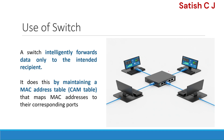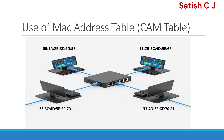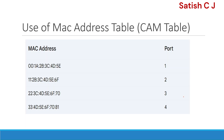If traffic is going from device A to device B, the network switch forwards the packet directly to that specific device — it is one-to-one communication. For this purpose it uses a table called the MAC address table, also known as the CAM table. Every system has a 48-bit MAC address, and these addresses are maintained in that table.